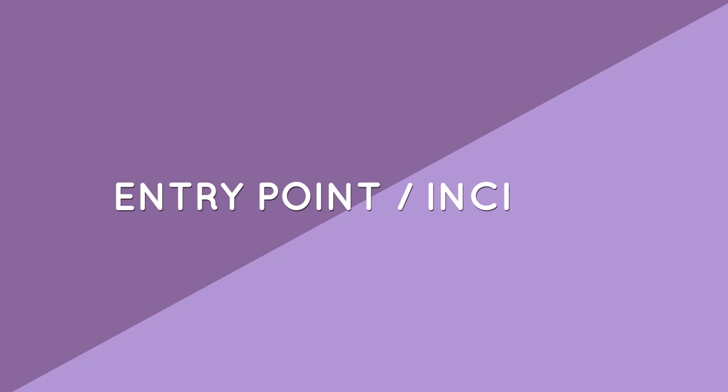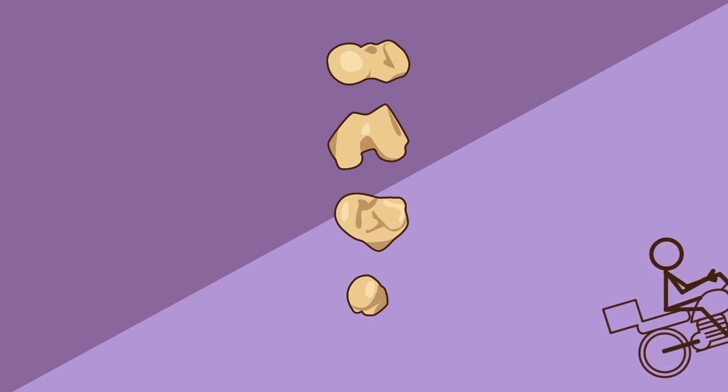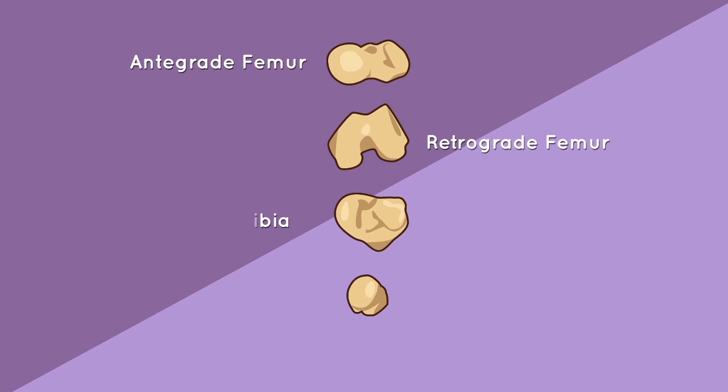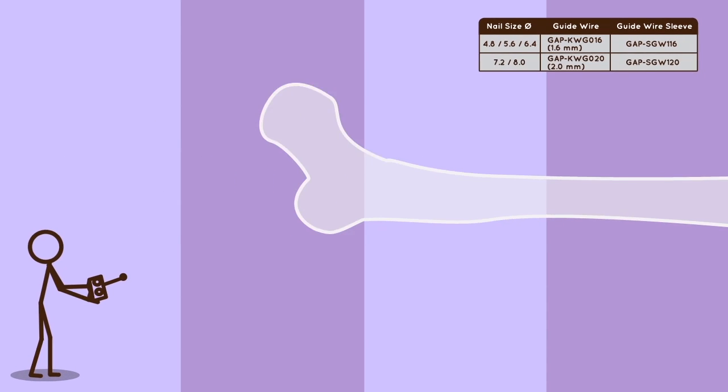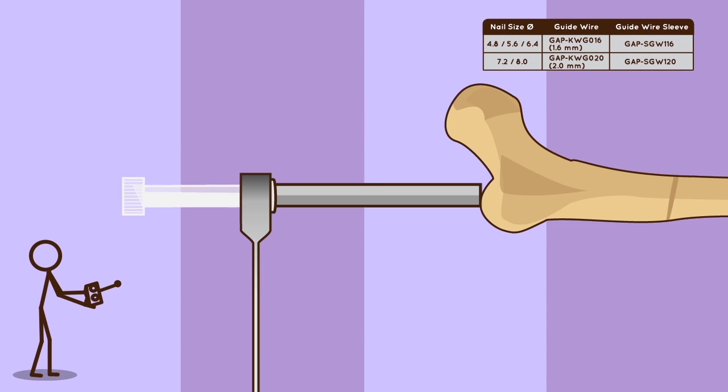Entry point incision: the Gap Nail system is indicated to treat fractures and deformities of the femur, tibia and humerus. For entry point and incision, please refer to the surgical technique. Guide wire insertion: insert the guide wire into the canal and validate the position under C-arm in both the AP and lateral views prior to reaming. The guide wire should be in line with the femoral neck in the lateral view.